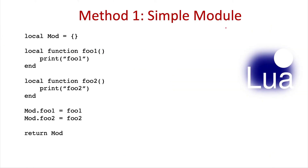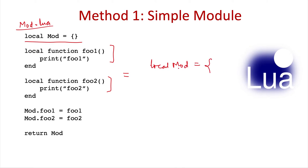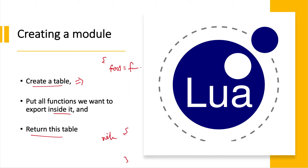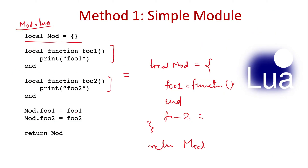The first method I call the simple module method. You create a file — for example, mod.lua — create an empty table, define some functions, and then assign them like mod.fu1 equal to the function. Alternatively, you can start with a local table and assign functions directly as key-value pairs. Both approaches are equivalent and run exactly the same way.